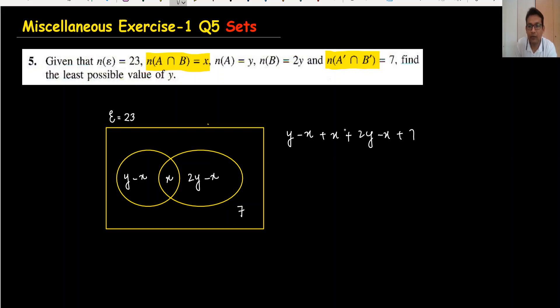The x terms cancel out, and combining y terms gives 3y. Moving 7 to the right side gives 16, so 3y = 16 + x, or y = (16 + x)/3.